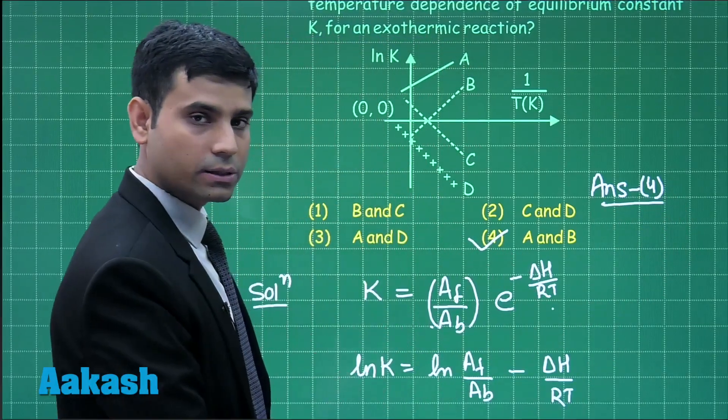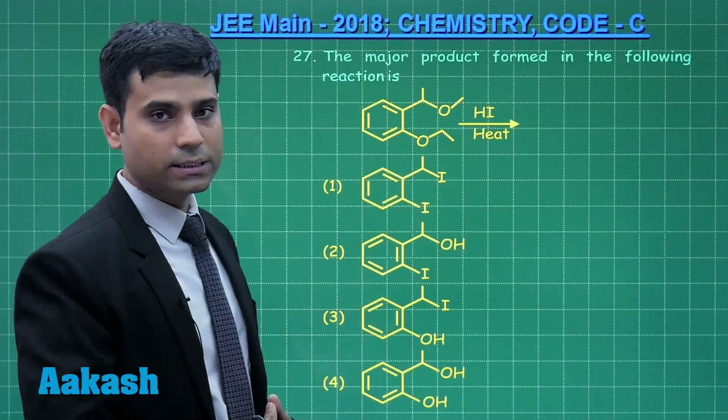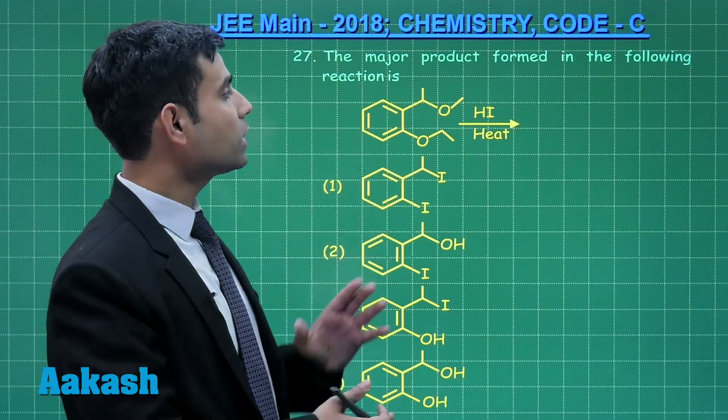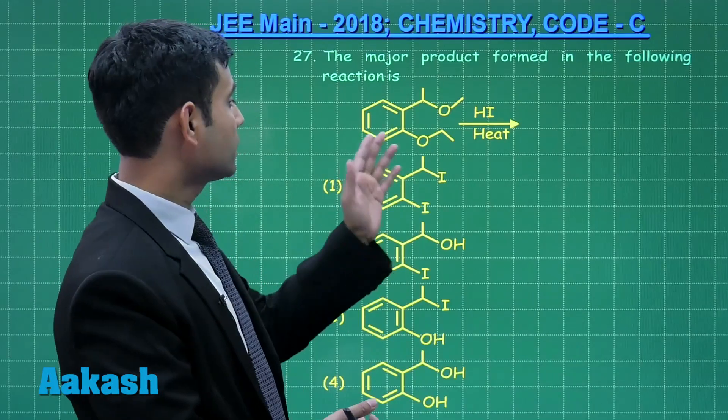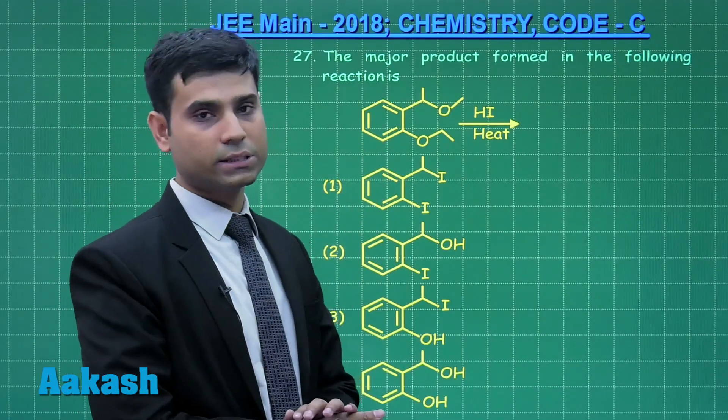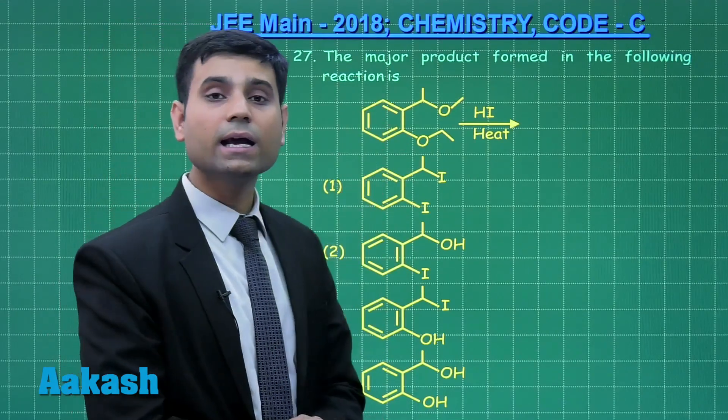Now let us move to the next question. This is question number 27 which says the major product formed in the following reaction. Here we have the ether which is reacting with HI. Students, this is a benzyl carbon.